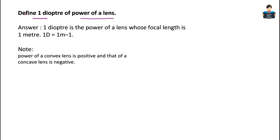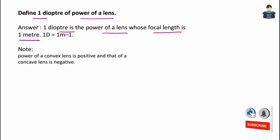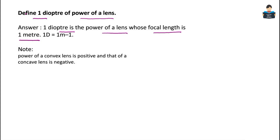The SI unit of power of a lens is the Diopter. 1 Diopter is defined as the power of a lens whose focal length is 1 meter. It is represented as 1 D equal to 1 m to the power minus 1.